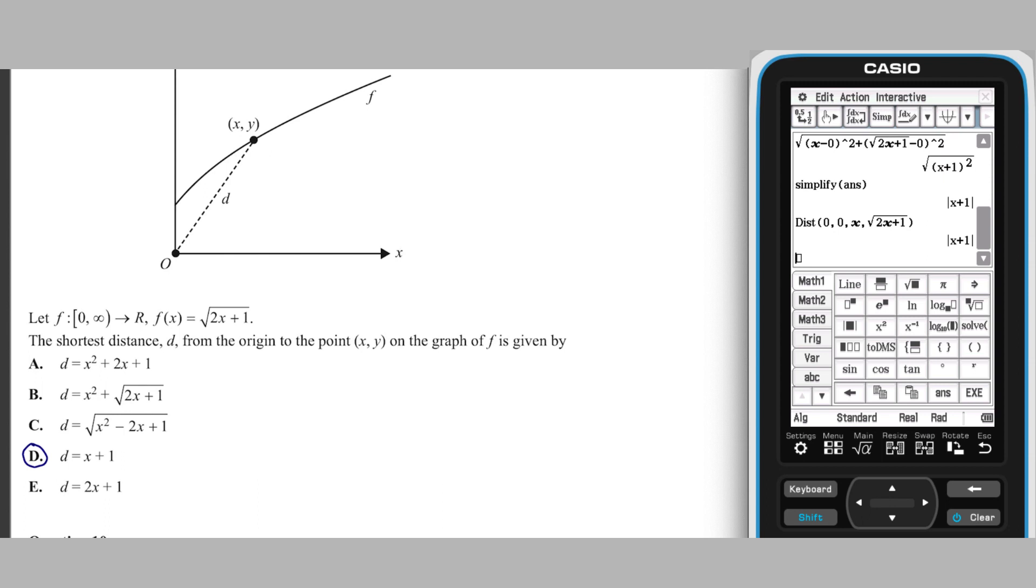A third approach is to tackle this question without any use of CAS. Given the relative simplicity of the function, the algebra works out quite cleanly. The distance formula generates the square root of this quadratic, which is a perfect square, meaning that we can take its square root, leading to the x plus 1 result.